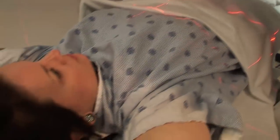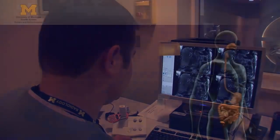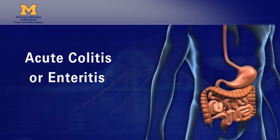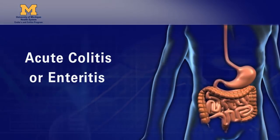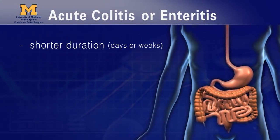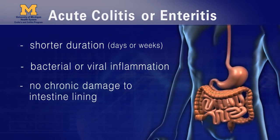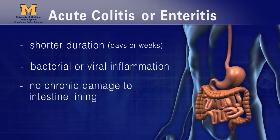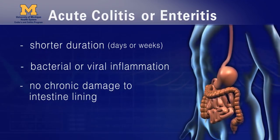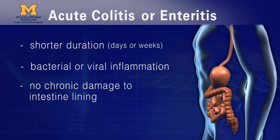Two other diagnoses that are not IBD are important to know about. One is acute infectious colitis or acute enteritis. These are due to inflammation of the colon or small intestine that lasts a short time — days or weeks — and then goes away. These are generally due to infections and don't leave any chronic damage behind that can be seen under a microscope. Sometimes people with acute infections of the GI tract are thought to have IBD but turn out to have just had a bad infection of part of the GI tract.